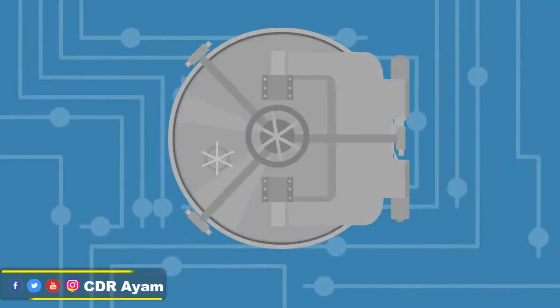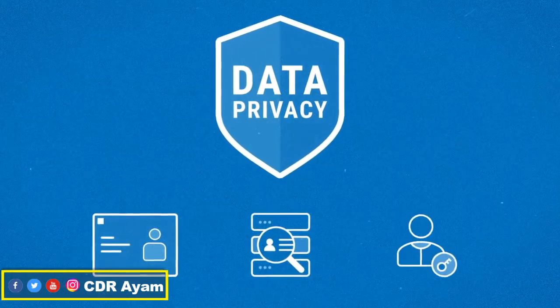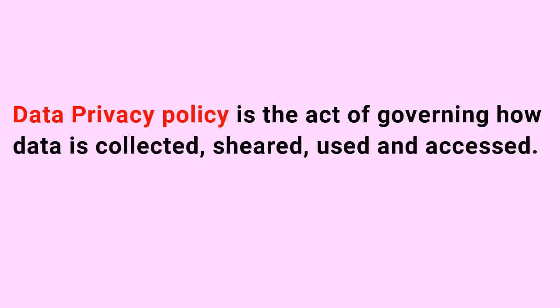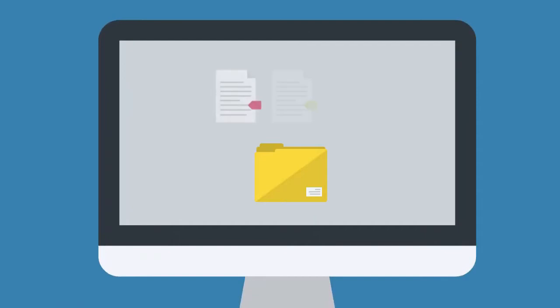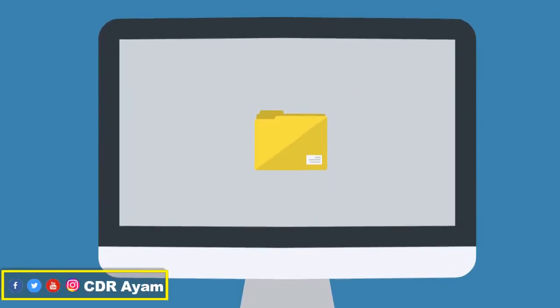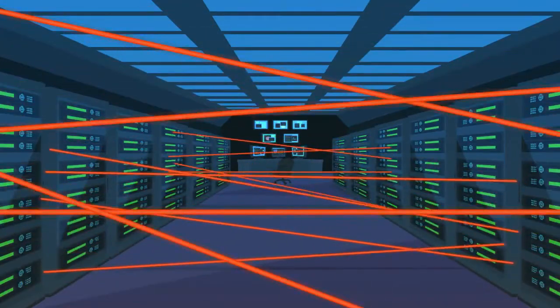One control mechanism to have in place for data management is data privacy, which is defined as the act of governing how data is collected, shared, used, and accessed. A data privacy control not only provides cyber data with privacy, it also preserves the integrity of the data and protects data from unauthorized individuals.